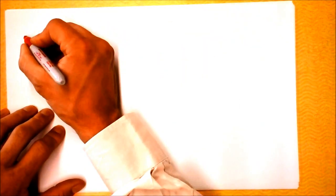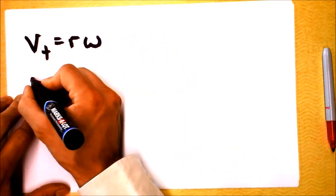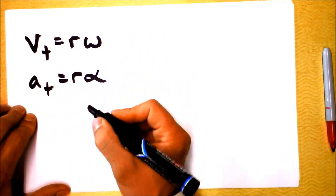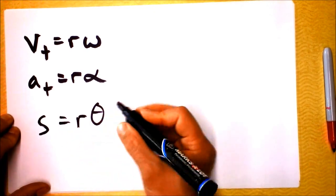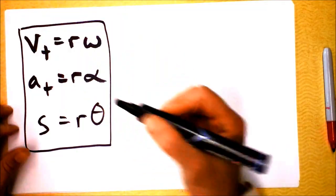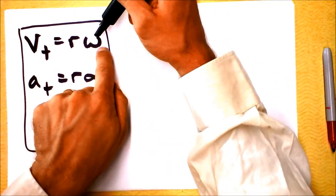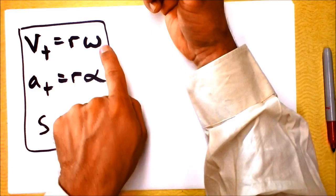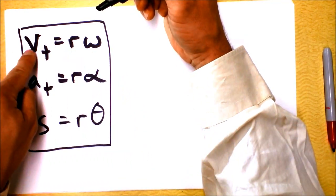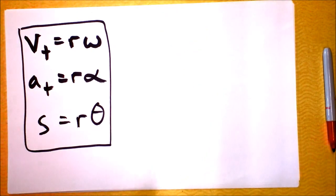Let me summarize the bridging-the-gap equations. In bold: v_T = rω, a_T = rα, and S = rθ. Notice their similar form — to go from circular to linear quantities, you multiply by r. For position: angle θ times r gives arc length S. For velocity: angular velocity ω times r gives tangential speed v_T. For acceleration: angular acceleration α times r gives tangential acceleration a_T.